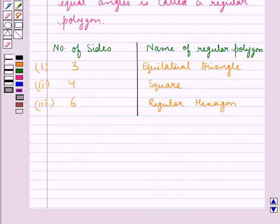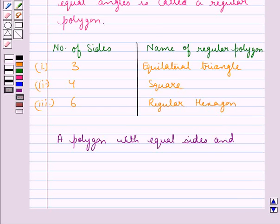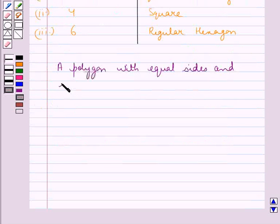Hence, our final answer in this case is: a polygon with equal sides and equal angles.